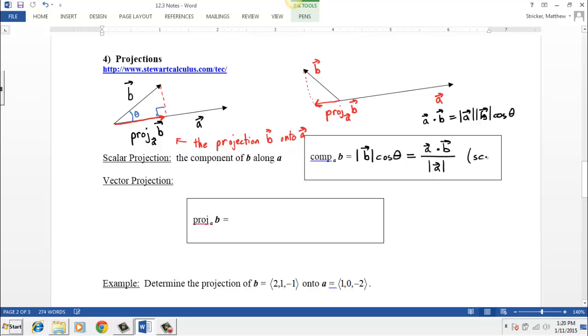And just, you might want to make a note that, again, this is a scalar, because the result of a dot product is a scalar, and we're just dividing by a magnitude, which is another scalar. Scalar divided by a scalar is a scalar.